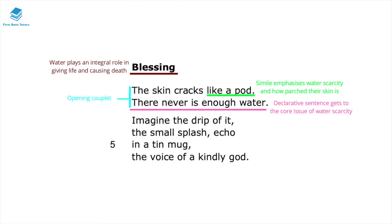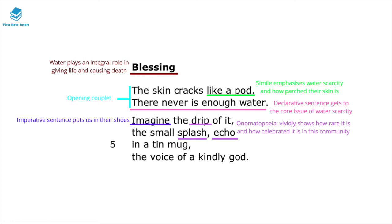This two-line stanza is an opening couplet that focuses our attention as readers on the issue of water. In the following verse we're told to imagine the drip of this water, and this imperative sentence puts us in the shoes of people who are very parched and don't necessarily have access to water, so they are constantly fantasising about it. The onomatopoeia of the drip, splash, and echo vividly shows how rare and celebrated water is within this community.